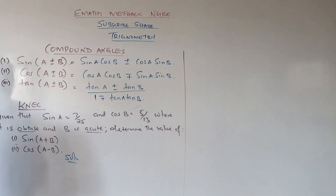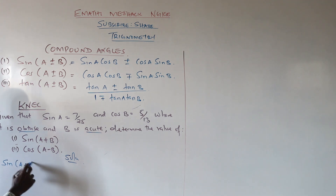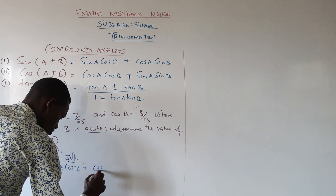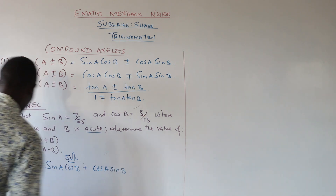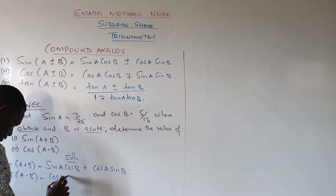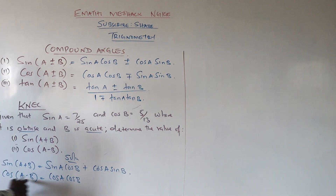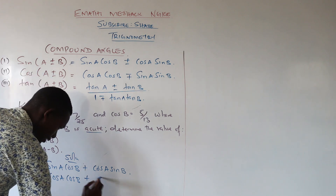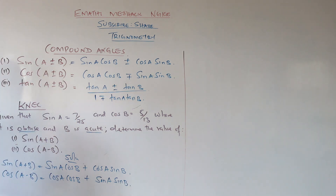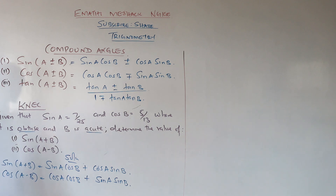Sine of a plus b equals sine a cos b plus cos a sin b. And cos of a minus b equals cos a cos b plus sine a sine b. In our case we are mainly interested in the cosine and sine values, though it is always good to find all of them.